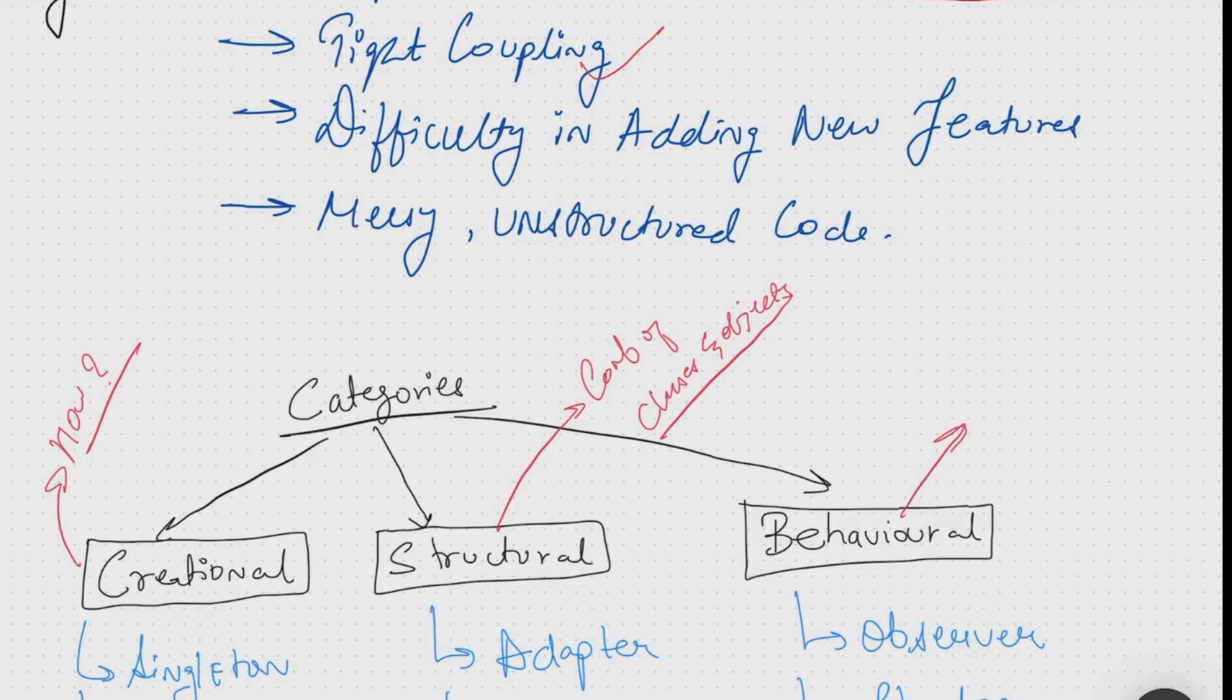Finally, behavioral design patterns deal with communication between objects. These ensure that interactions are well-structured and manageable. This pattern is about defining how objects collaborate and interact. So we're focusing on object collaboration and interaction.